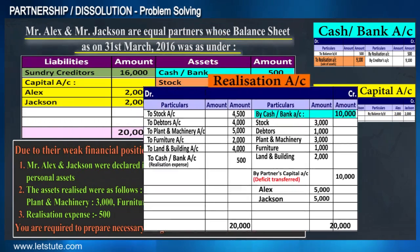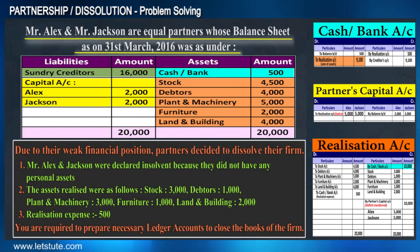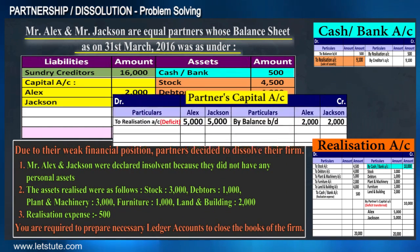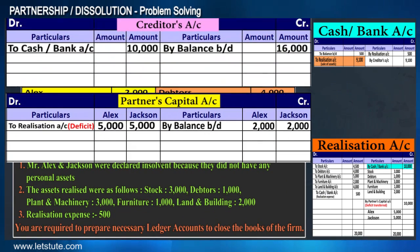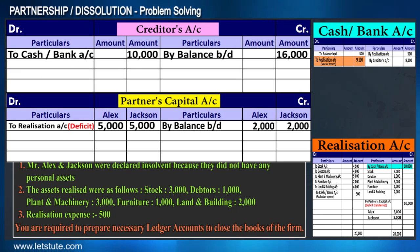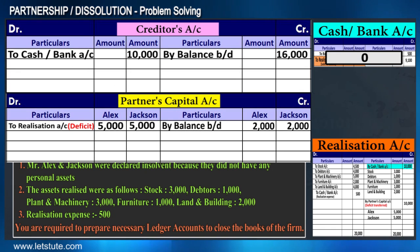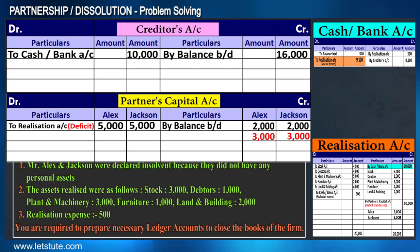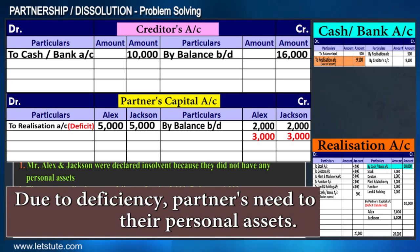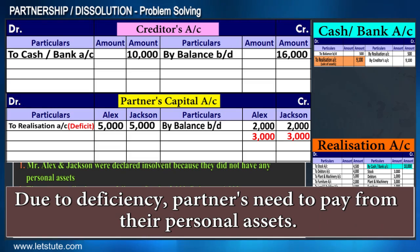We now settle the partners' capital account and pay off the creditors, but we don't have enough money to pay the creditors. This concludes there is a deficiency — the partners need to pay this from their personal assets.